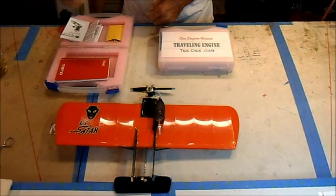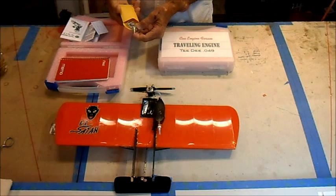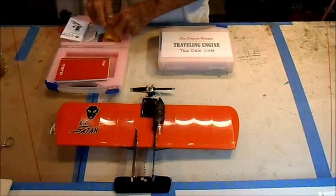We've got some extra glow head gaskets, and we've got some extra mounting hardware, screws, spinners, and any type of thing that we might need.